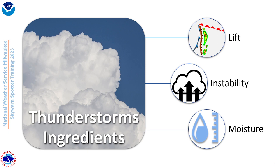So those are the three things we're trying to gauge each time we're putting together a thunderstorm forecast — how widespread or how strong each of these three are to try to determine how widespread a severe...